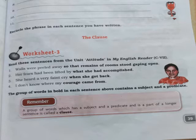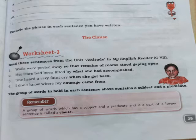Now, worksheet 3 — there is a clause. What is a clause? A group of words which has a subject and a predicate and is a part of a longer sentence is called a clause. For example: 'Walls were peeled away so that remains of rooms stood gaping open.' 'Her fear had been lifted by what she had accomplished.' The bold portion 'so that remains of rooms stood gaping open' is a clause, having its own subject and predicate.